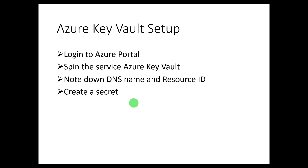The first step is to set up Azure Key Vault. We need to log into the Azure portal, create the Key Vault service, and finally create a secret. At the end of this process we need to note the DNS name and resource ID, because these are the inputs needed for the Databricks scoped credential.